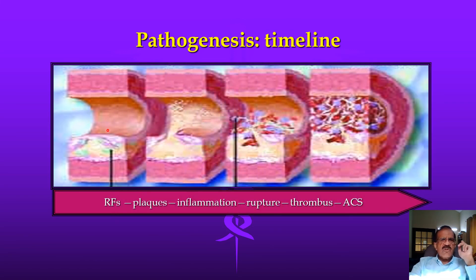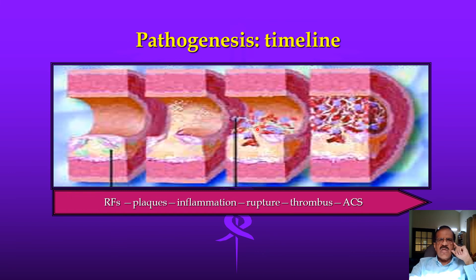The timeline: normal vessel → very little intimal thickening → more thickening → rupture → leakage of material attracting platelets. At the partial stage one may develop acute or unstable angina; at complete occlusion, one develops a full infarction. This is how things develop: risk factors lead to plaque formation, then inflammation, rupture, thrombosis formation, and acute coronary syndrome — which is the subject of a separate lecture.